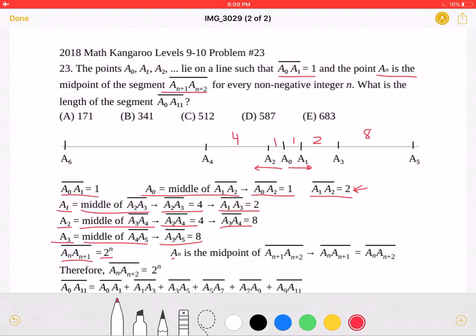2 to the n. Because an is the midpoint of segment an+1, an+2, that means that segment an, an+1 must be equal to segment an, an+2.